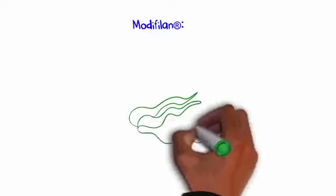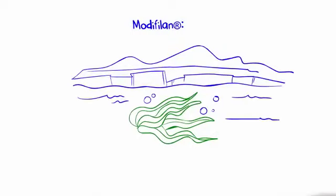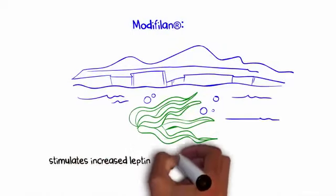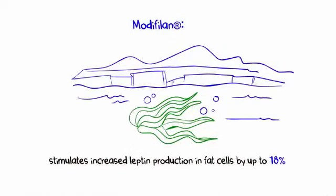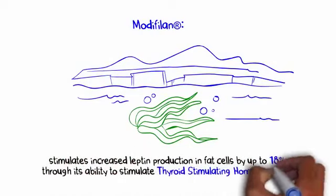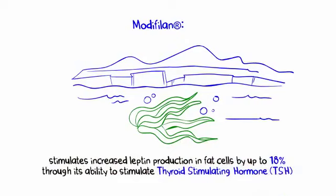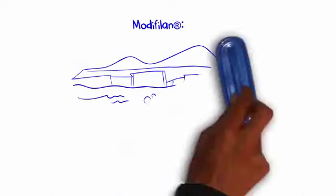The third ingredient, Modifilan, a potent seaweed extract harvested from pristine arctic waters, has been shown to stimulate increased leptin production in fat cells by up to 18%, through its ability to stimulate thyroid-stimulating hormone, or TSH, in the adrenals. Stimulation of TSH, in turn, stimulates the production of leptin in fat cells.